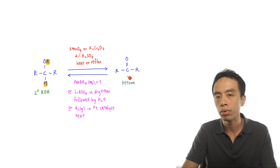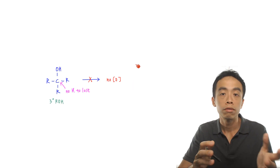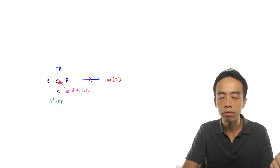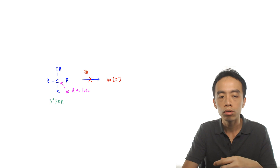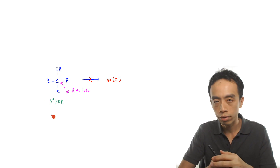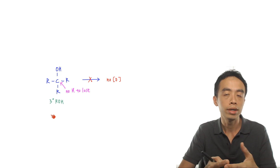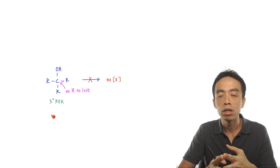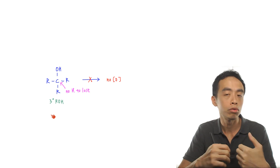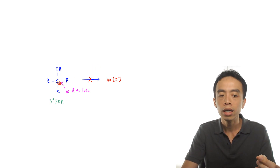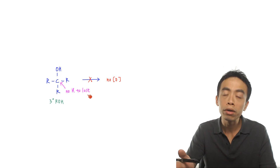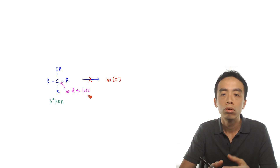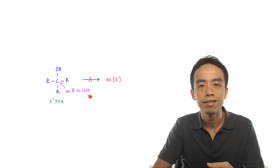Finally, tertiary alcohols: the carbon carrying the OH group has three R groups attached. Tertiary alcohols cannot be oxidized. The reason is that in order to be oxidized, a compound must either gain oxygen or lose hydrogen. For a tertiary carbon attached to three R groups, there is no hydrogen attached to that carbon — so there is no hydrogen for the tertiary carbon to lose, and therefore tertiary alcohols cannot be oxidized.